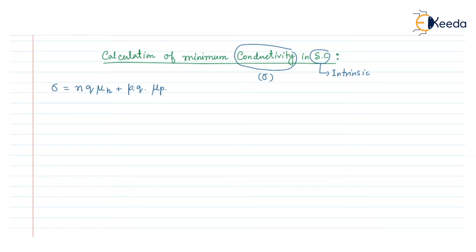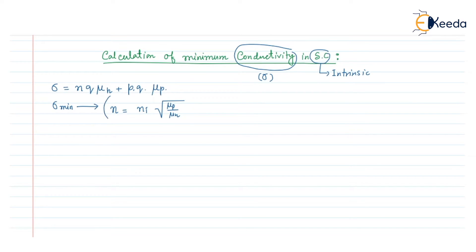And q is the electronic charge. When the conductivity value will be minimum, the electron concentration can be written as n_i times the square root of mu_p divided by mu_n. This is the equation that gives the electron concentration when the conductivity value is minimum.